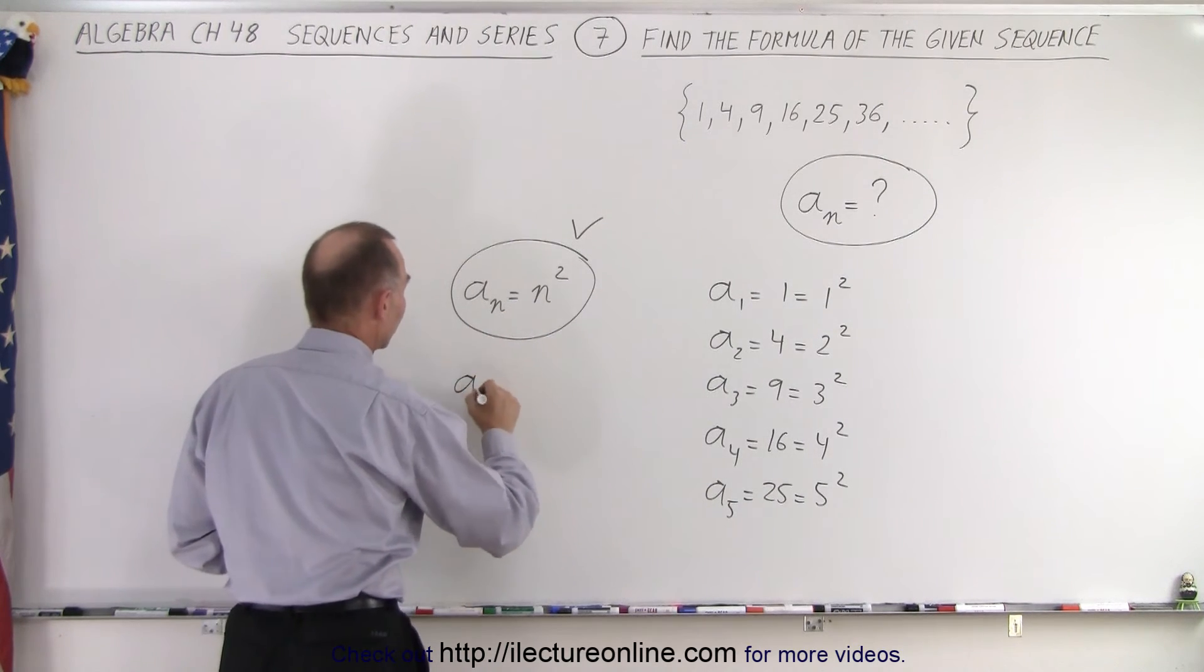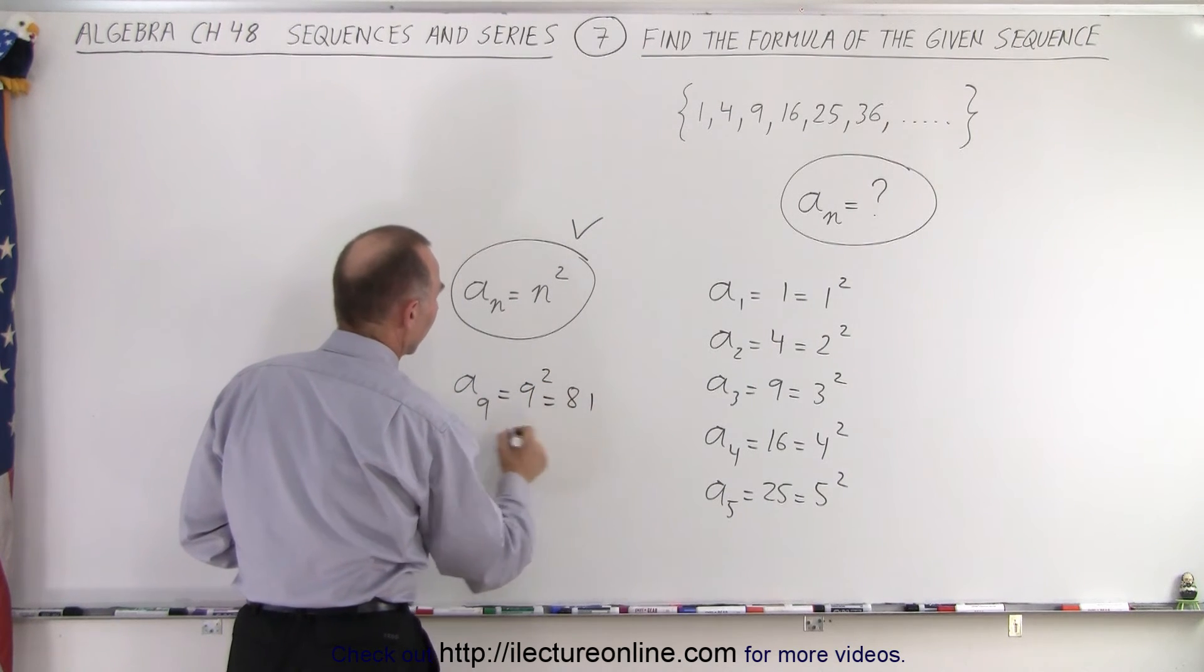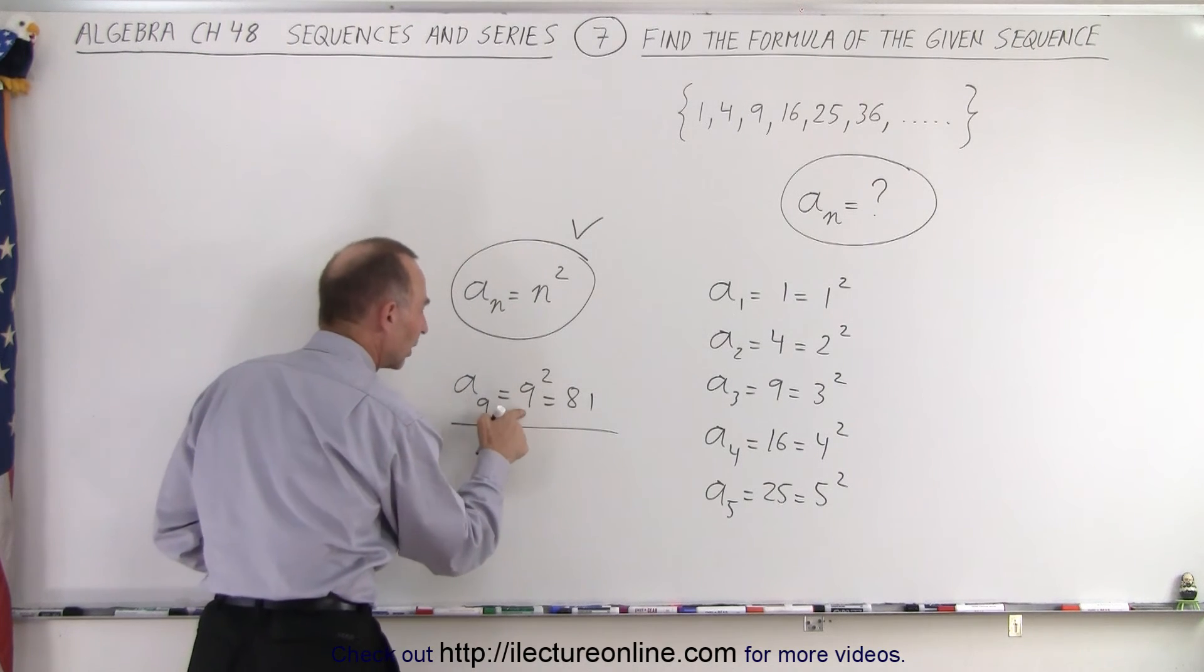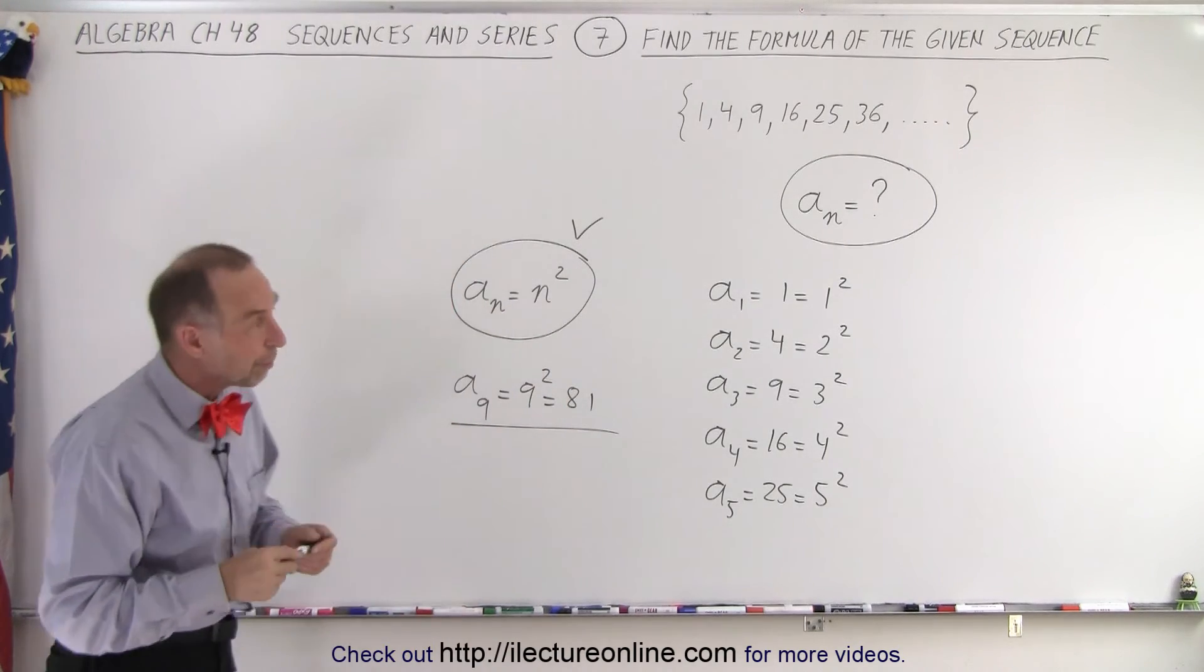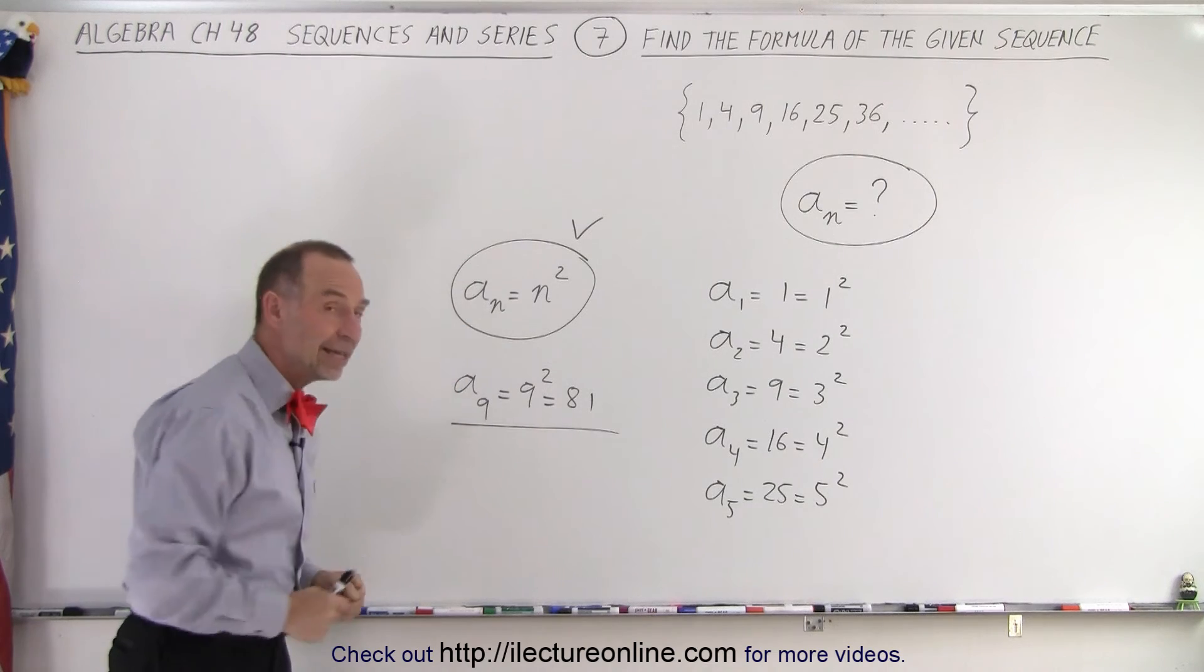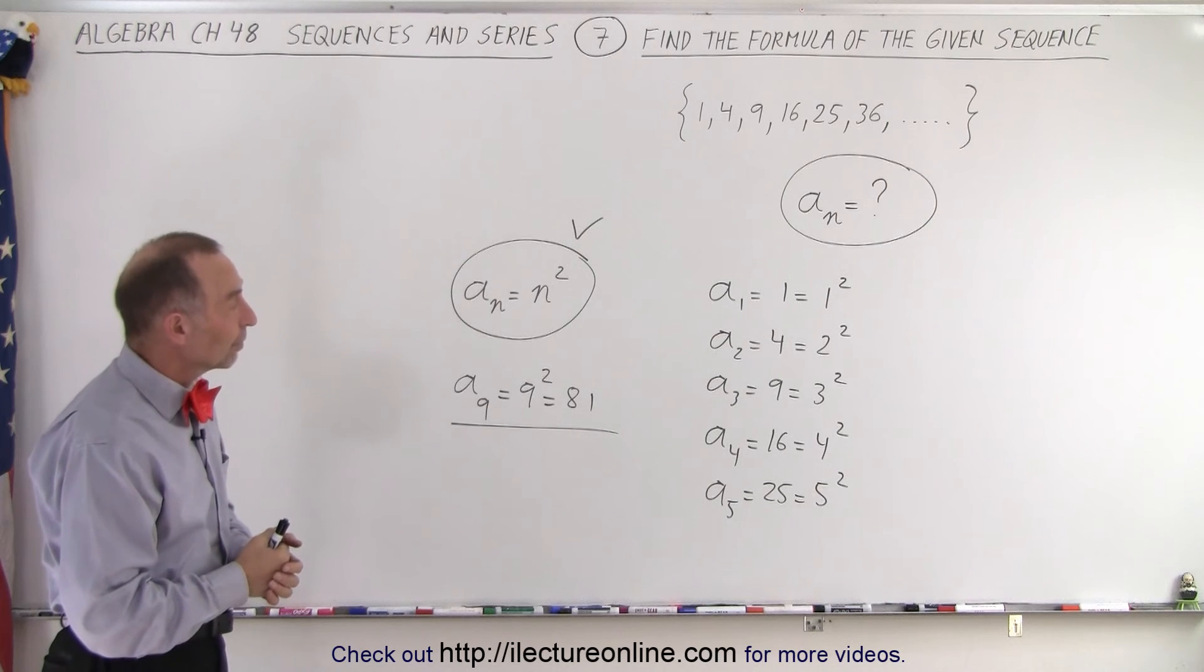In other words, if I want to know a sub 9, that is equal to 9 squared, which is equal to 81. And therefore, I can identify every term in the sequence simply by plugging that value into my equation to get the number that corresponds to that particular term.